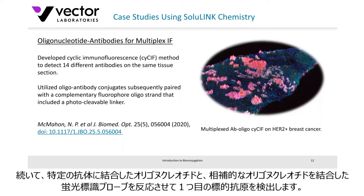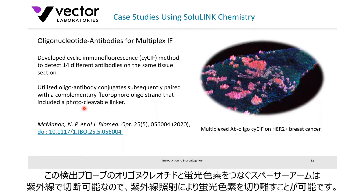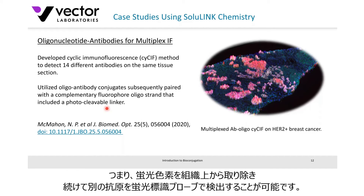There were 14 antibodies with unique oligonucleotides on the tissue at the one time. They then put on a complementary fluorophore oligo strand and did visualization and identification. Because it also had a photocleavable linker — as we discussed earlier regarding spacer arms with cleavable options — this photocleavable linker arm could be broken off using UV light exposure, allowing them to do reprobing later on with other targets.